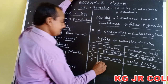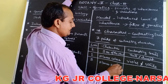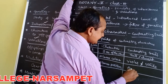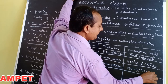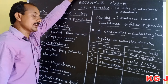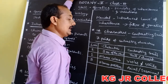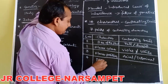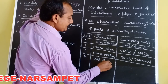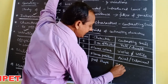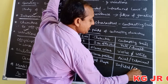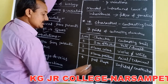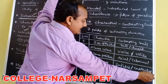Third contrasting trait: flower position — axial or terminal. An axial flower-bearing plant is crossed with a terminal flower-bearing plant. Fourth contrasting trait: pod shape — inflated or constricted.